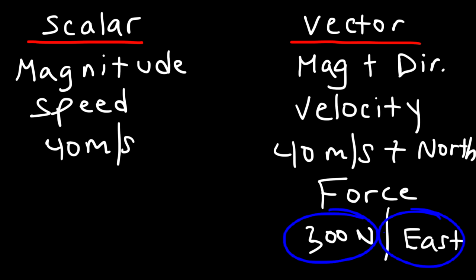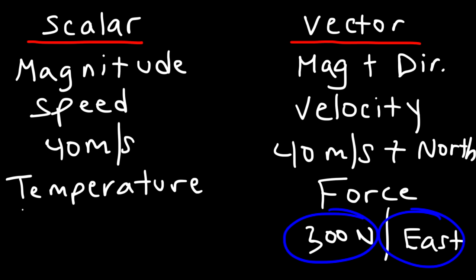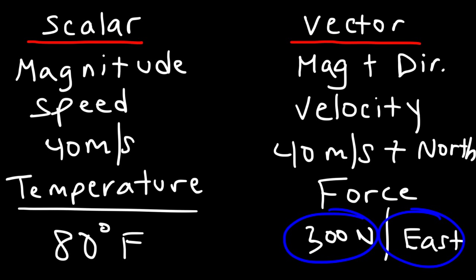Another scalar quantity would be temperature. You can't apply direction to temperature. If someone asks what is the temperature today, you wouldn't say 'It is 80 degrees east' — that would make no sense. You can't apply a temperature with a direction. So temperature is considered a scalar quantity. You can't say 80 degrees Fahrenheit north or anything like that.